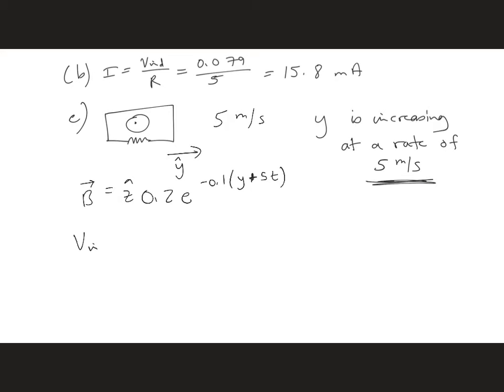So then we have V induced equal, in Faraday's law here, E dot DL. So we can set V induced equal to what's on the right side, which is if we integrate over the surface of the loop, db/dt dot n hat ds, that will give us V induced.